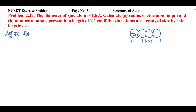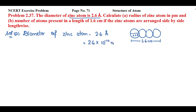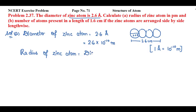In this problem, we have to find the radius of zinc atom. We will write the diameter of zinc atom — it is 2.6 angstrom. Now I will convert this value in meter. I know that 1 angstrom is equal to 10 raised to the power minus 10 meter. The radius of zinc atom will be half of the diameter of zinc atom, that is diameter divided by 2.